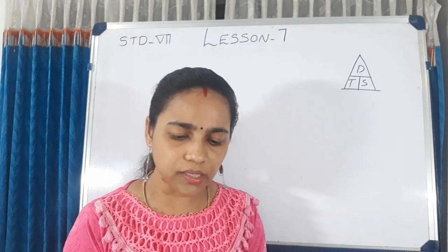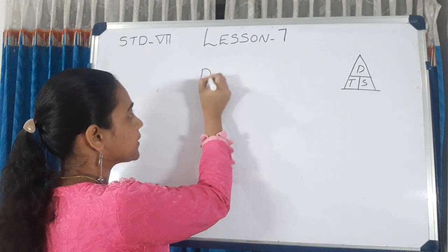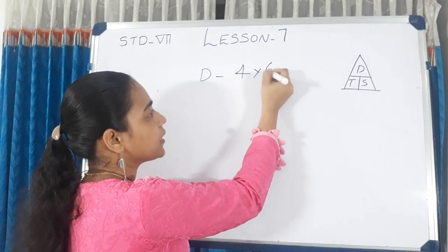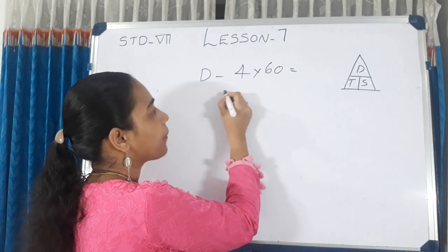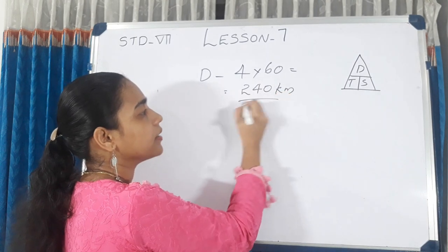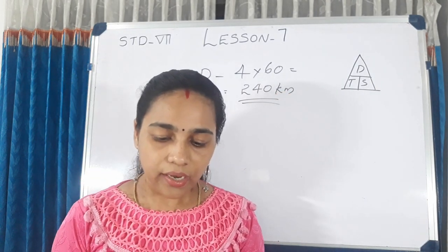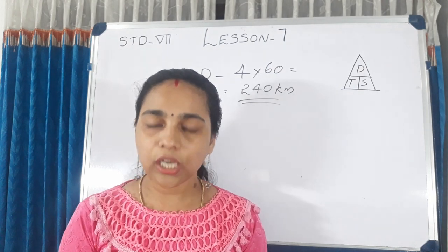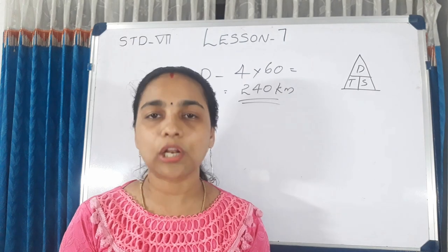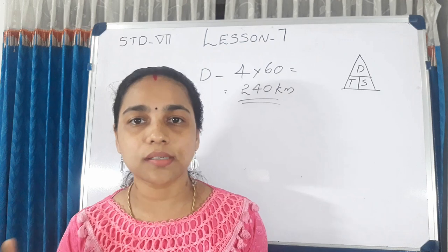For the car: distance is 120 km, time is 2 hours, so the average speed is 120 divided by 2, which is 60 km per hour.